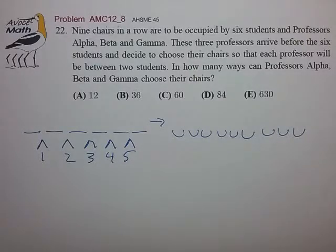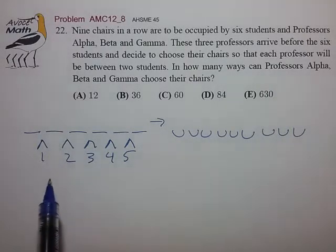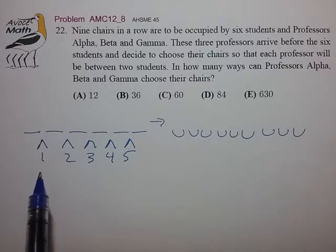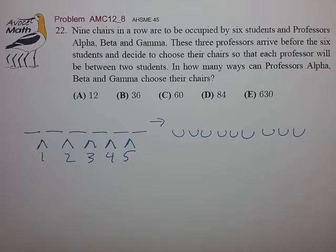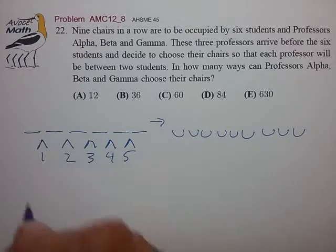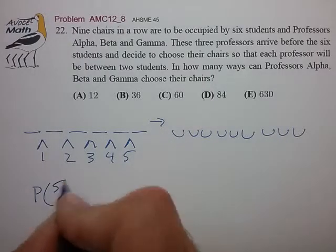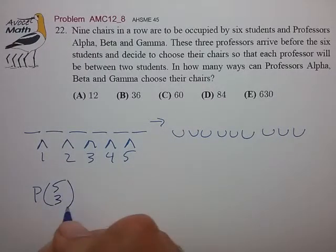And the counting now becomes quite a bit simpler because we see that our counting task is really just to decide how many ways can we insert the three professors into these five labeled gaps. And that turns out to be quite simple.